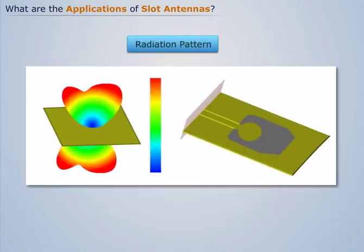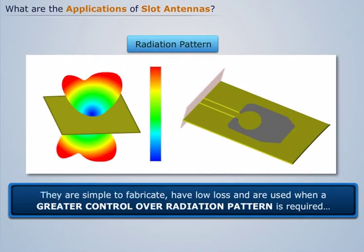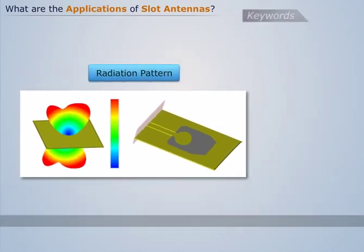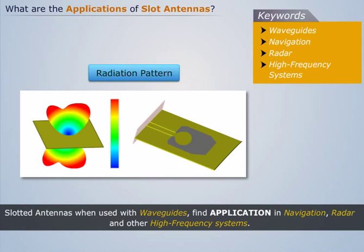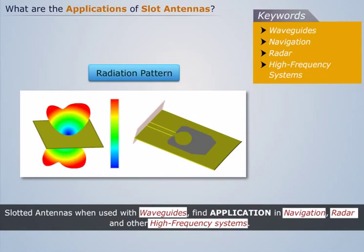Similar is the case with slot antennas, which provide inexpensive ways for frequency scanning arrays and are economical for designing antenna arrays. They are simple to fabricate, have low loss, and are used when greater control over radiation pattern is required. Thus, slotted antennas, when used with waveguides, find application in navigation radar and other high-frequency systems.